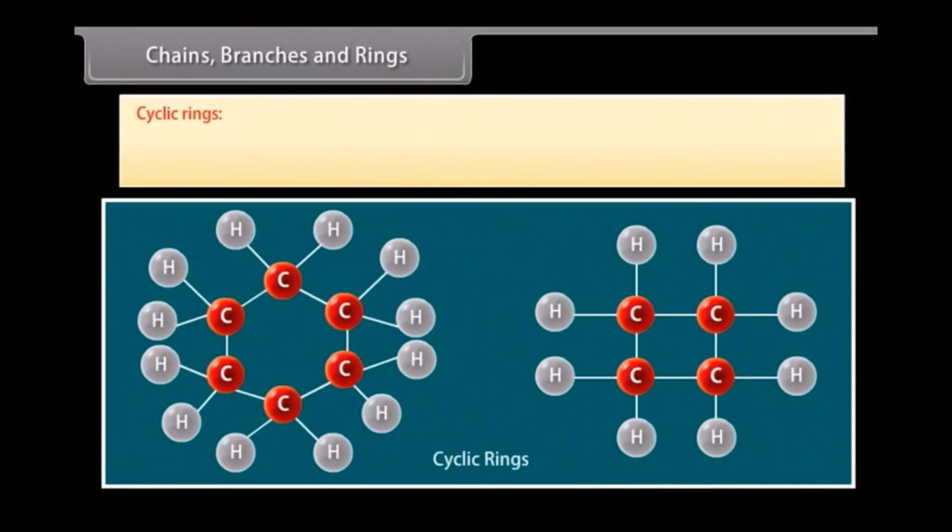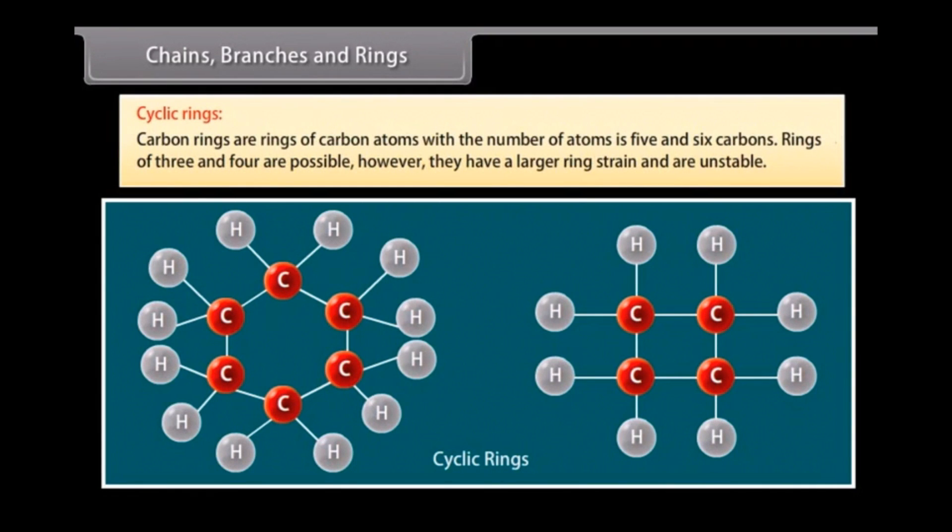Cyclic rings. Carbon rings are rings of carbon atoms. The number of atoms to form a ring is five and six carbons. Rings of three and four are possible. However, they have a larger ring strain and are unstable.